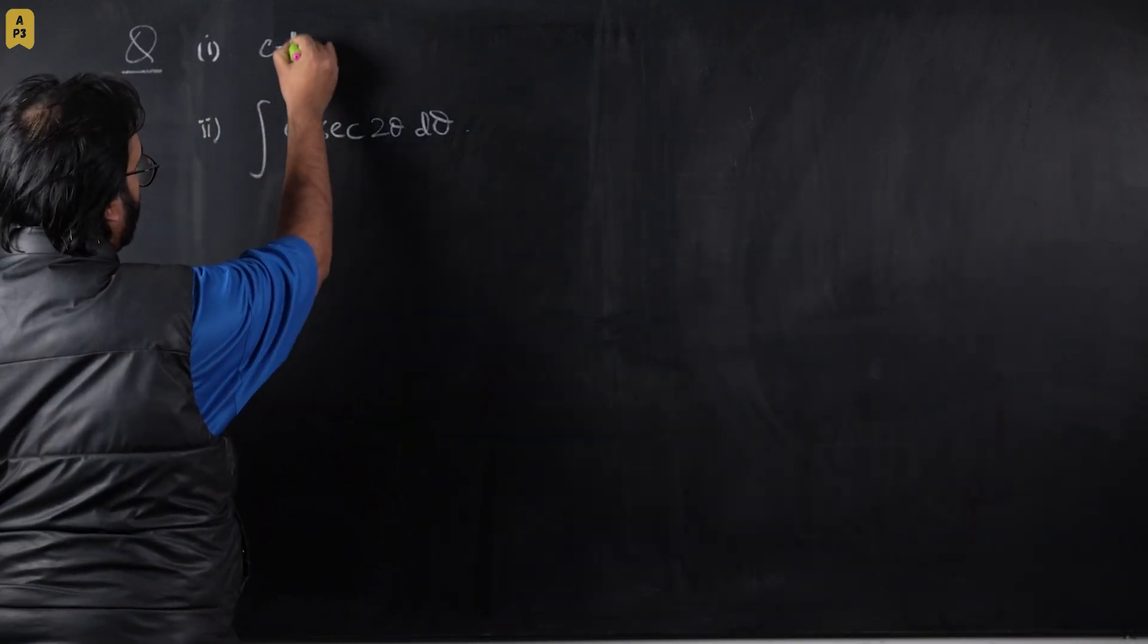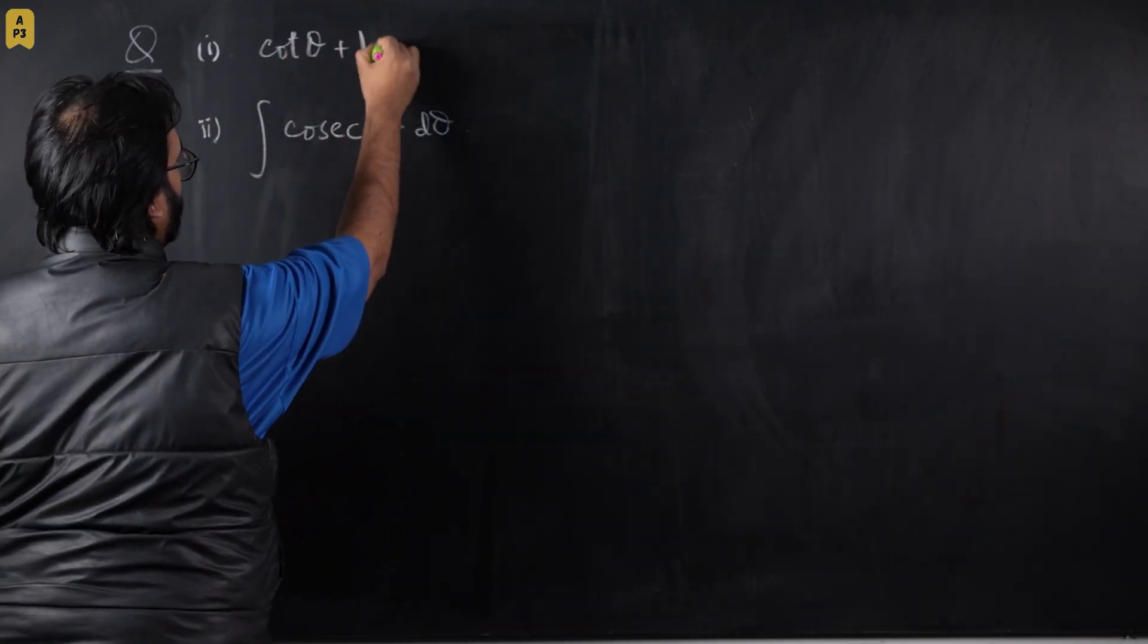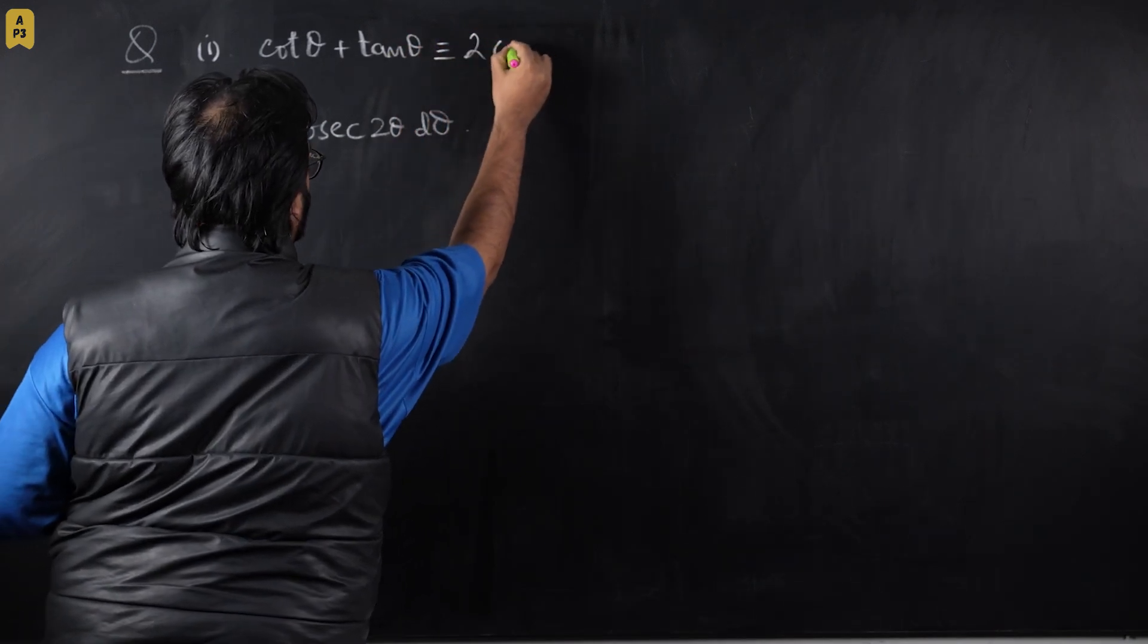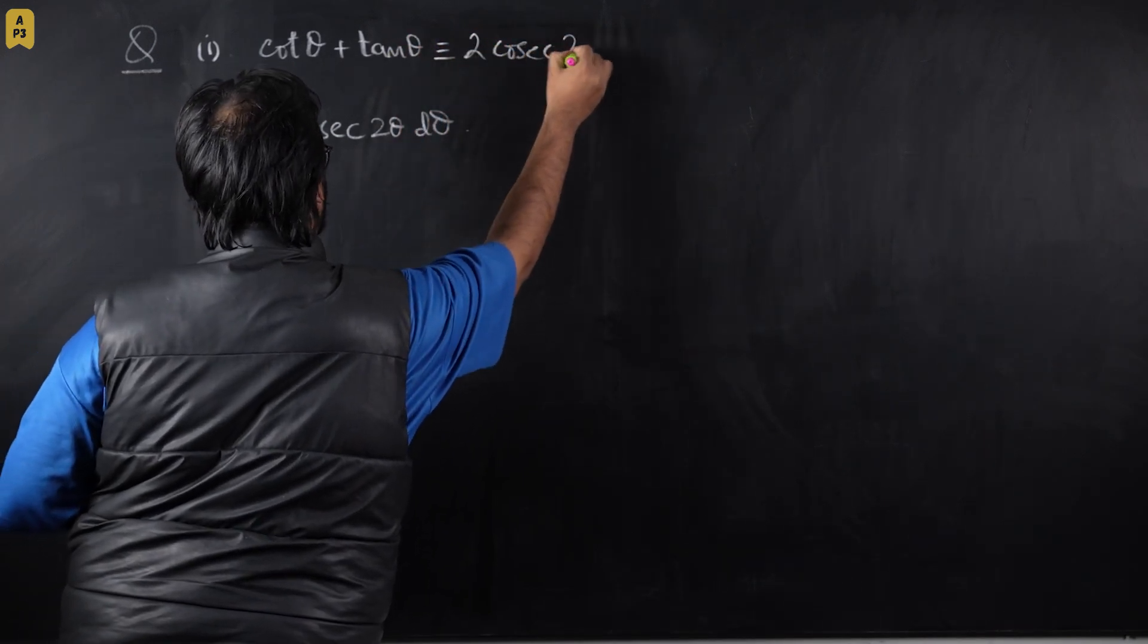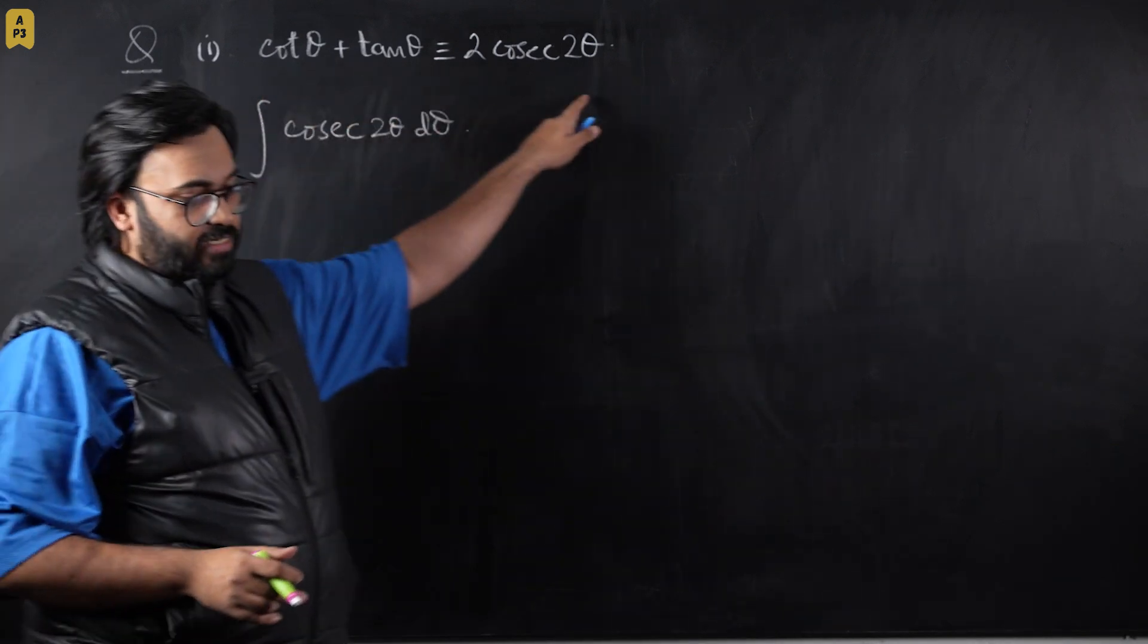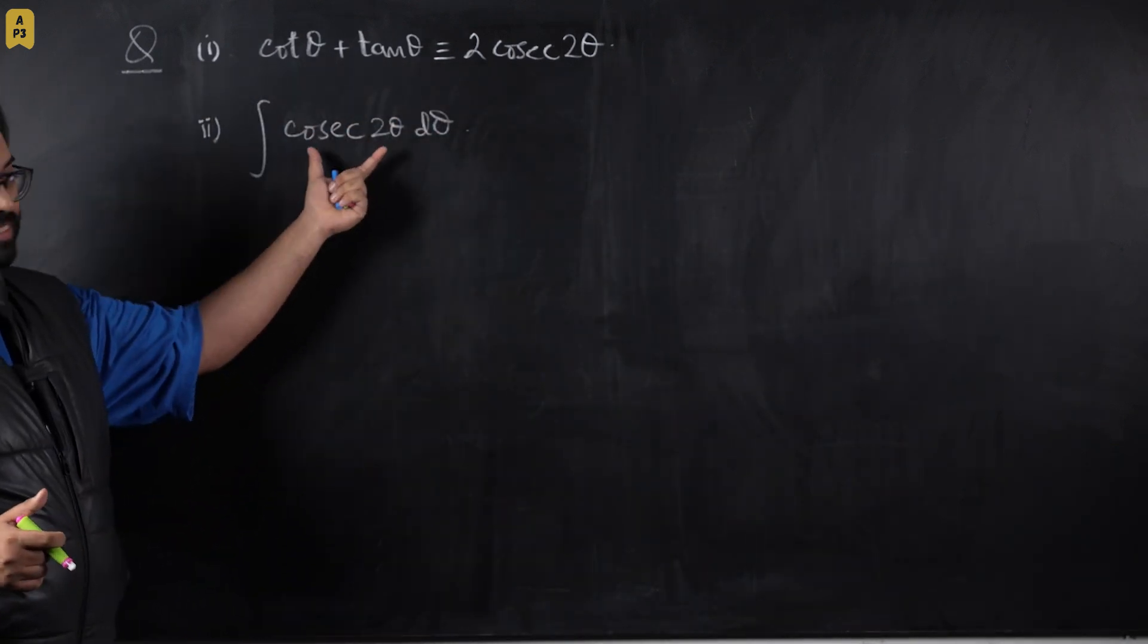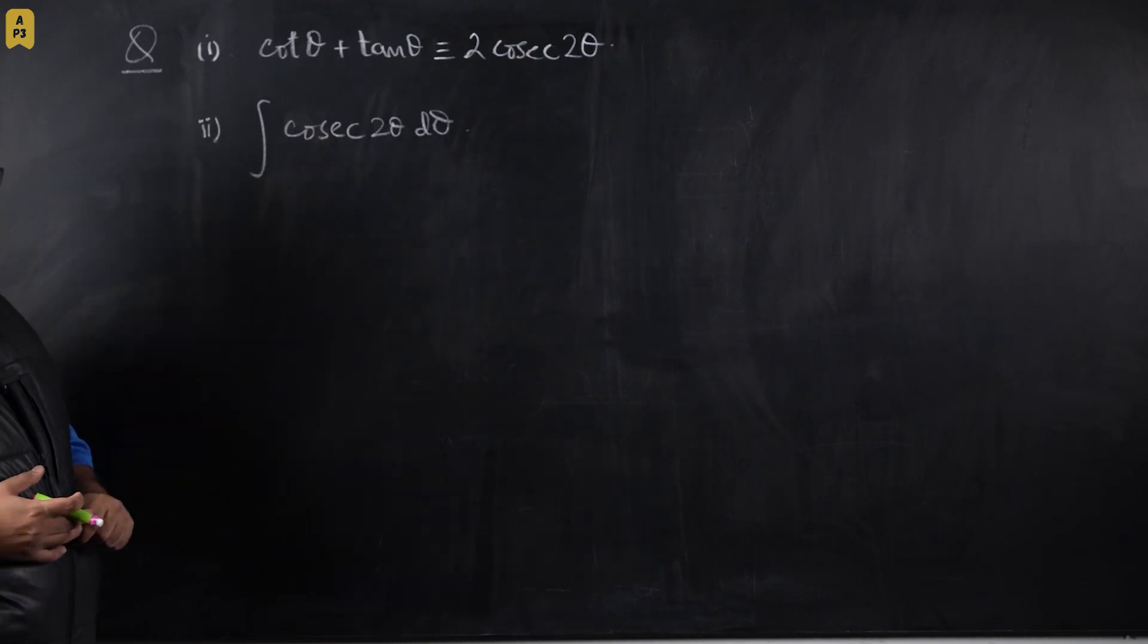And the identity that is, I think, is cot θ + tan θ = 2 cosec 2θ. So this is the identity that you must have proven in the previous part. And hence in the second part they will ask you to hence integrate this portion.